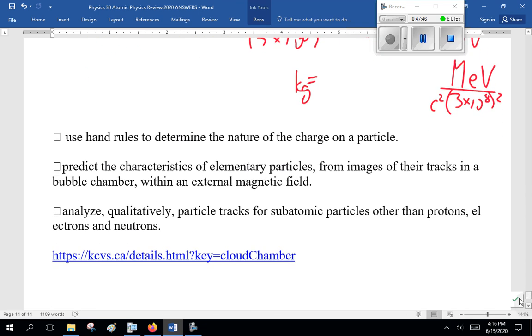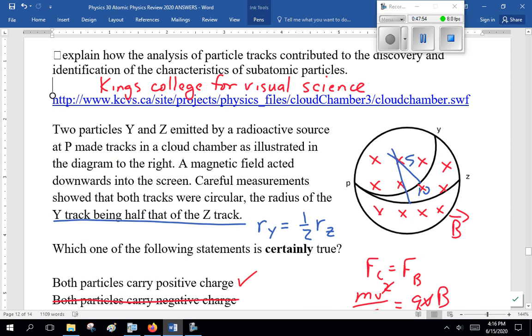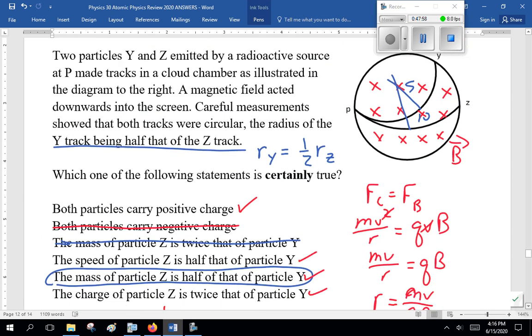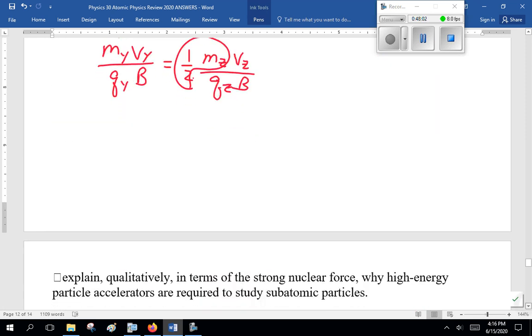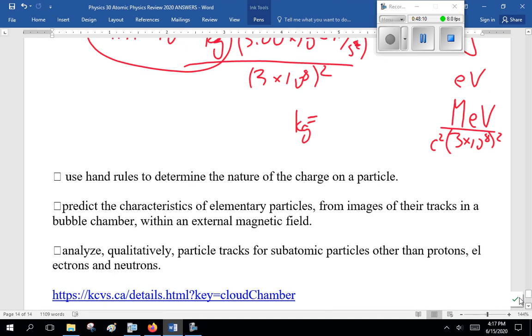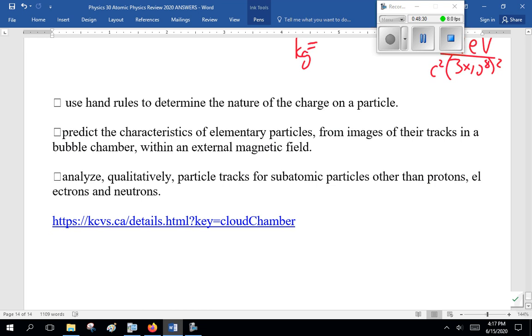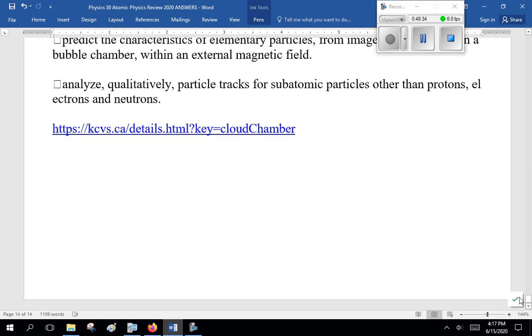Use hand rules to determine the nature of the charge on a particle. Like what we did back here in this poorly described cloud chamber. Use the third left-hand rule or third right-hand rule to tell direction of magnetic field and force. Predict the characteristics of elementary particles from images of the tracks in a bubble chamber within an external magnetic field. Well, we just talked about that. Analyze qualitatively particle tracks, subatomic particles, other than protons, electrons, and neutrons. KCPS has a lovely cloud chamber app. Go play with it. I'm not going to try drawing one and explaining it. And that's it for me. I realize I did that kind of quickly, but that's life. And that's the preview. Got any questions, shoot me an email.